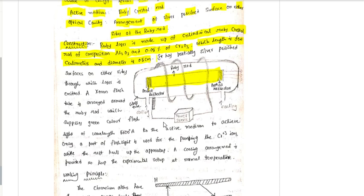It has partially silver polished surfaces on either side through which the laser beam is emitted. One side is a perfect reflector and the other side is a partial reflector. The laser beam exits through the partial reflector side.